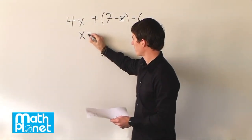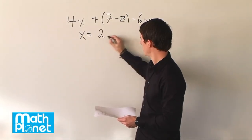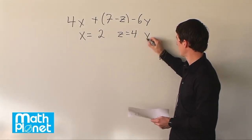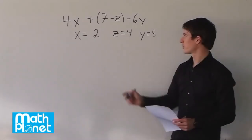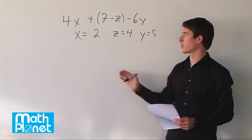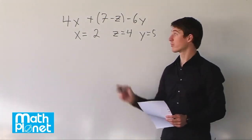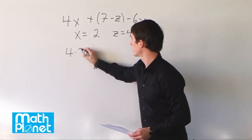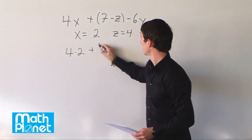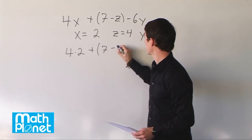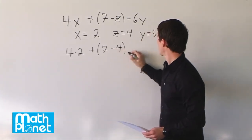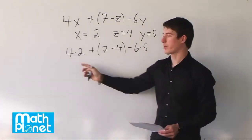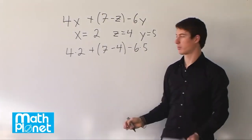We're given x is equal to 2, z is equal to 4, and y is equal to 5. So here we have our values of x, z, and y, so we can just plug in or evaluate for those 3 values. So here we have 4 times 2 plus 7 minus z is 4, and minus 6 times y which is 5. Now we can just multiply these out and simplify it a little bit from here.